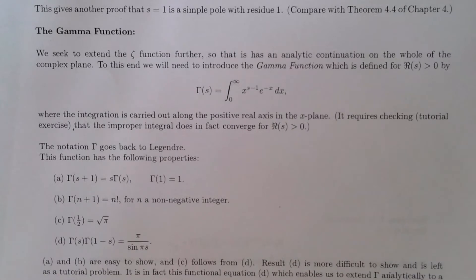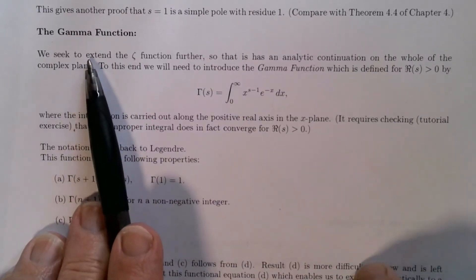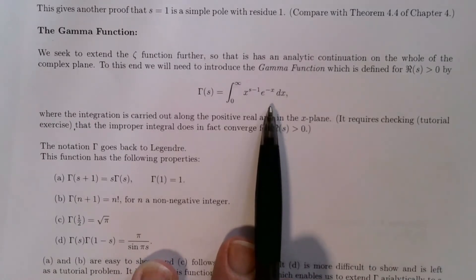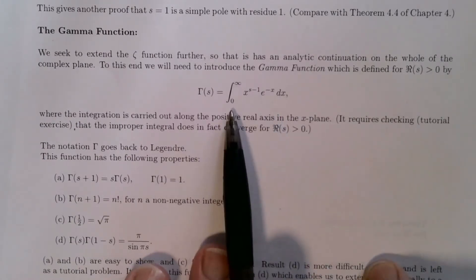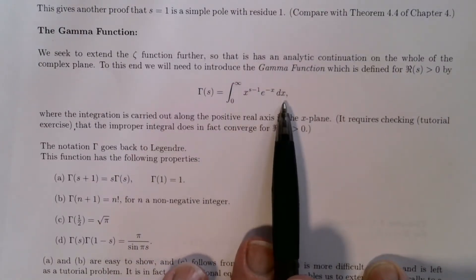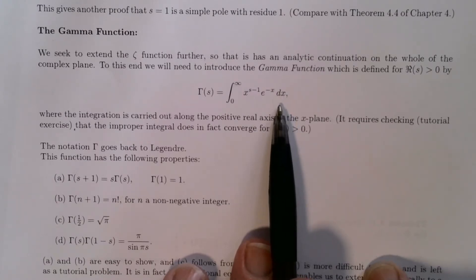Welcome again to our journey into number theory. We introduced in the previous section the gamma function, which you may have come across in advanced courses in calculus. Gamma of s is an integral — the integral from 0 to infinity of x to the s minus 1 times e to the minus x dx. It's an improper integral and it converges for the real part of s bigger than 0.